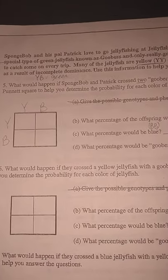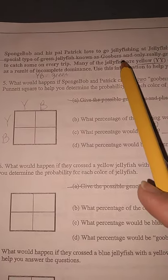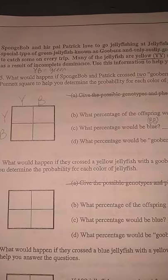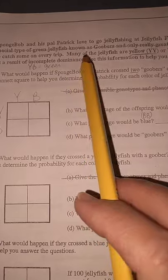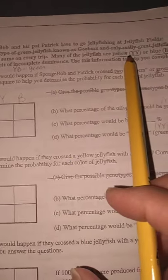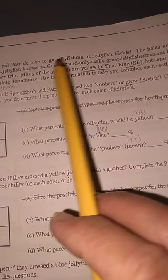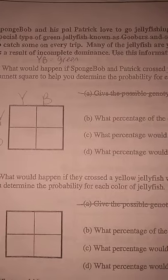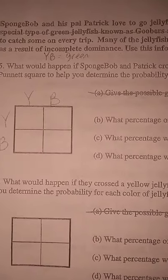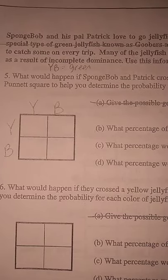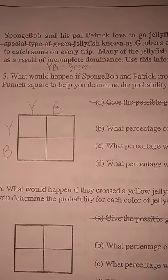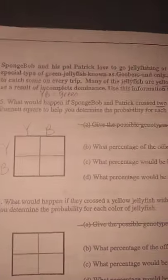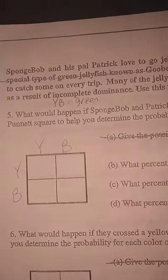SpongeBob and his pal Patrick go jellyfishing in jellyfish fields, home to a special type of green jellyfish called goobers. Many jellyfish are yellow (YY) or blue (BB), and yellow and blue making green is the incomplete dominance trait. Don't get confused trying to figure out if it's incomplete or codominant — you'll be told. If it's codominant, both traits show up together; if it's incomplete dominance, the two mix to give a totally different blended color.